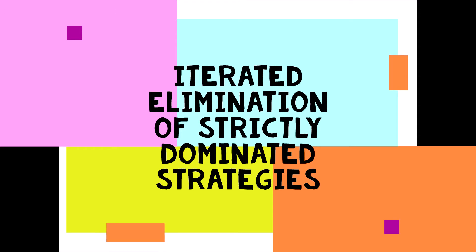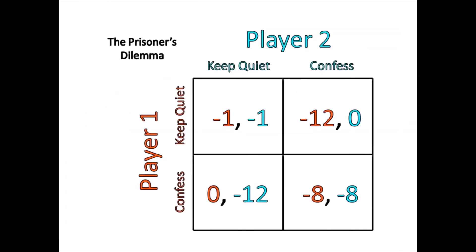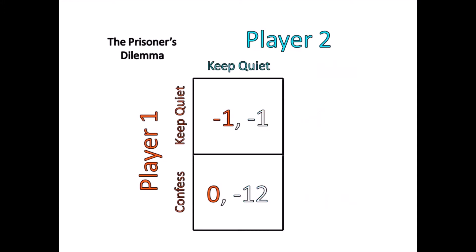In the last video, we looked at the Prisoner's Dilemma, and the solution to this game was for both players to confess. The reason for that is confess strictly dominates keep quiet. Keep quiet was a strictly dominated strategy — it was never in the player's best interest to individually keep quiet. Confess always produced a better outcome than keep quiet.